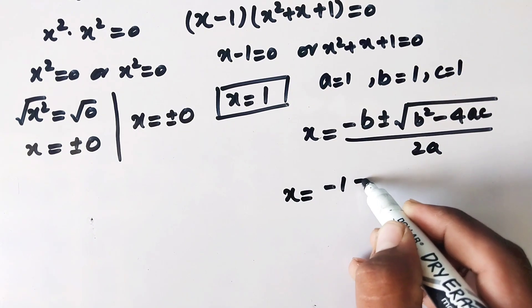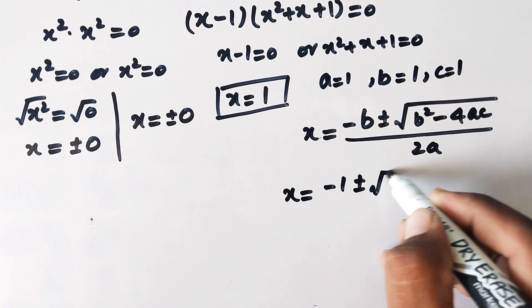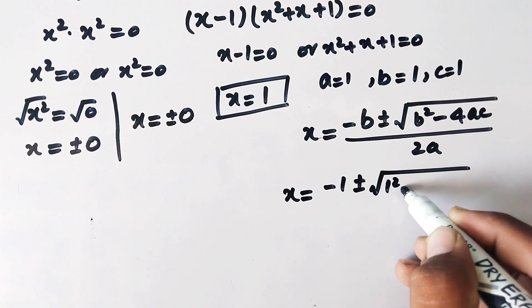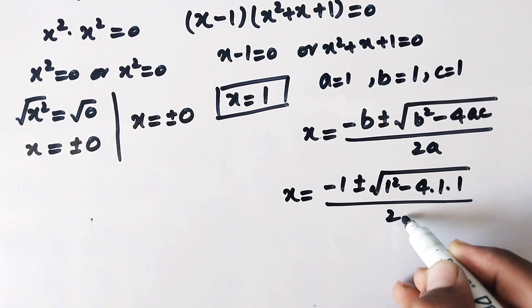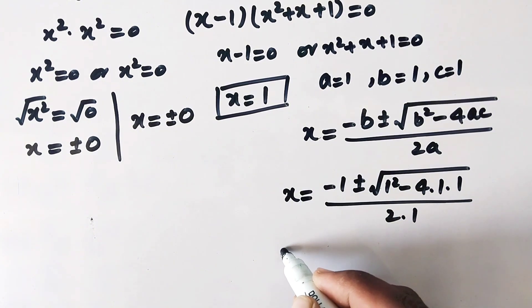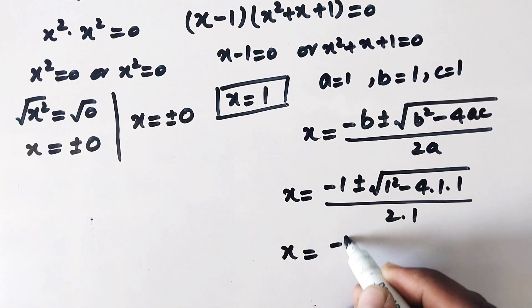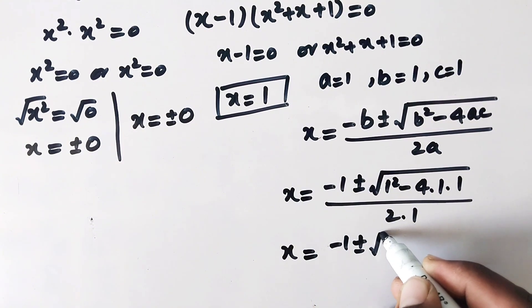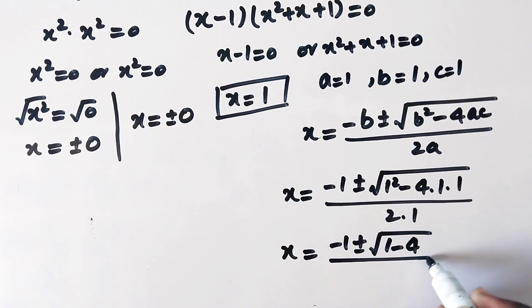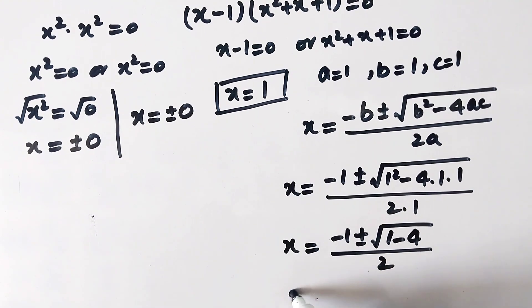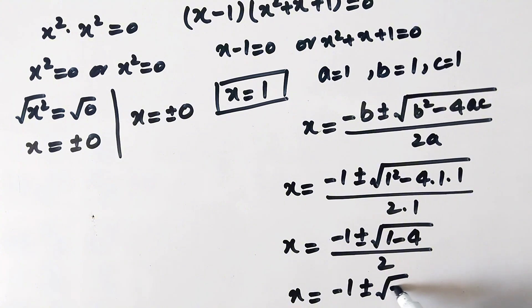Substituting the values of a, b, and c: x equals minus 1 plus or minus the square root of 1 minus 4 times 1 times 1, all over 2 times 1. That gives x equals minus 1 plus or minus the square root of 1 minus 4, over 2.